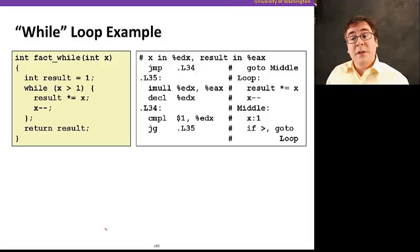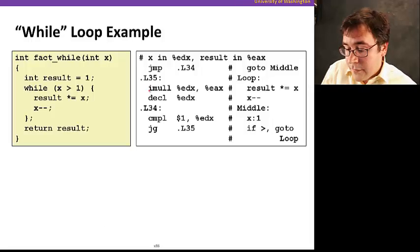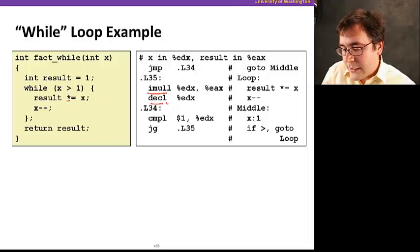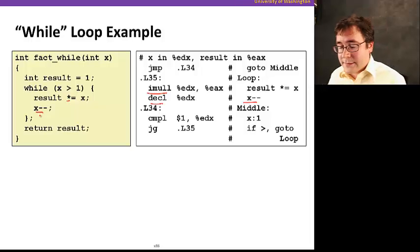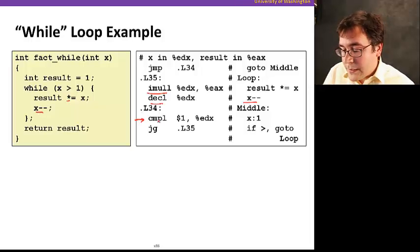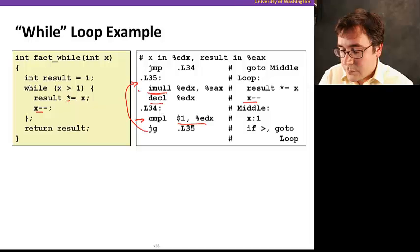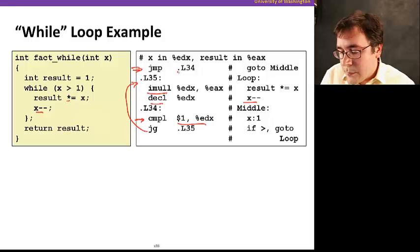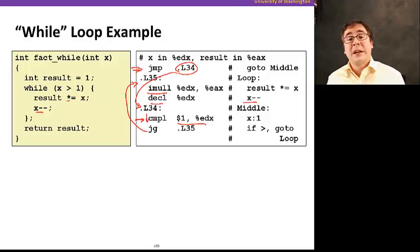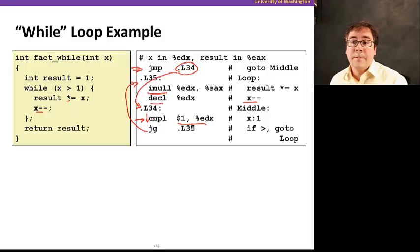Let's look at the while loop assembly example. Similarly to the do-while, we have multiplication implementing the multiply, and the decrement is decrementing x. Here the comparison happens — we're comparing EDX with 1, and if it's greater than, we jump back to the beginning of the loop. The main difference here is that now we have a jump to where the condition check is. That's how we implement while loops — we're just jumping over the body of the loop compared to do-while.